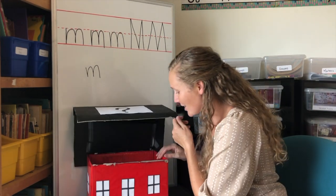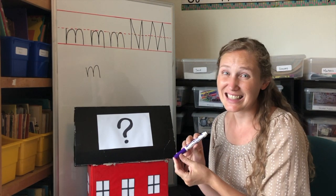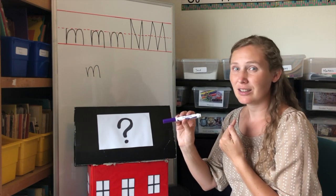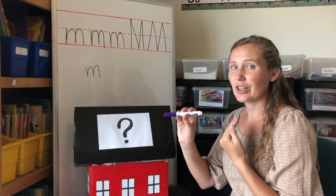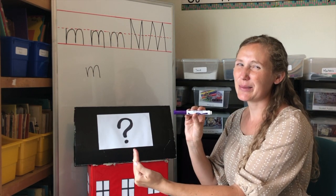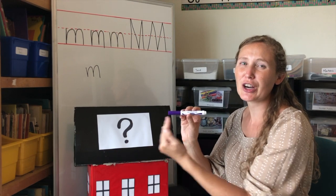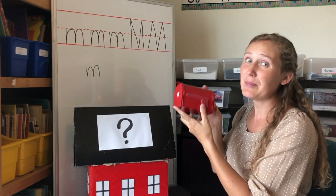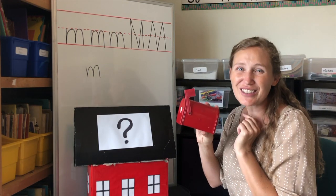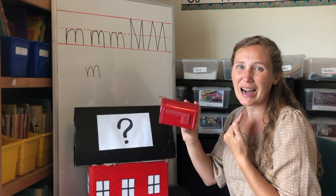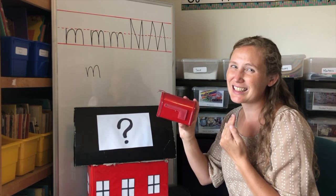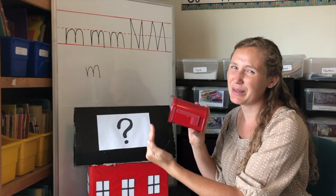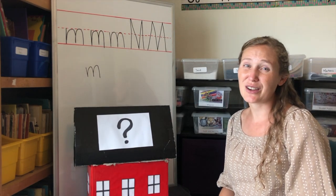What else is in our schoolhouse? Oh, this is fun to use. It's a marker. Marker. Where's the M sound? It's at the beginning — m, m, marker. Good. Last item is a mailbox. You've got mail! Mailbox. Where's the M sound? Yes, it's at the beginning. Thank you for doing Schoolhouse Sort with me today.